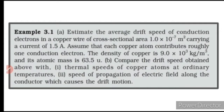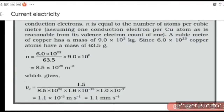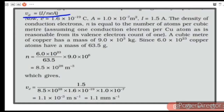Here U stands for atomic mass unit. We are asked to find the average drift speed. Rearranging the equation, we have the expression for drift speed as Vd = I / (N·E·A). Here I is given directly; E is 1.6×10⁻¹⁹ coulomb, and area is also given. What is unknown is N.